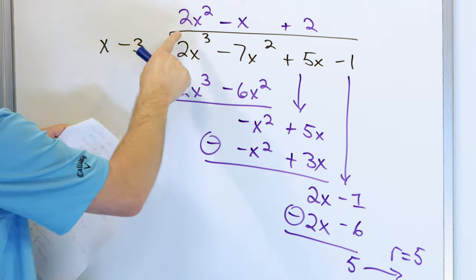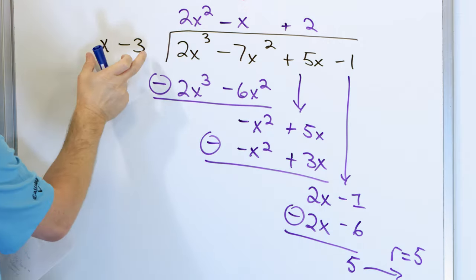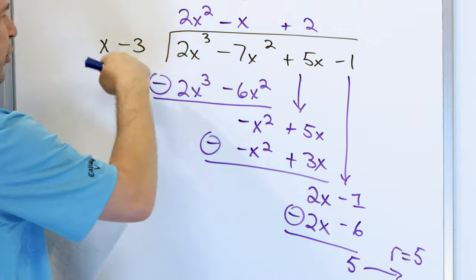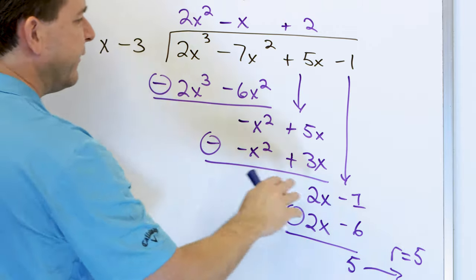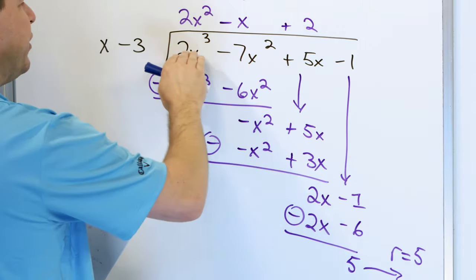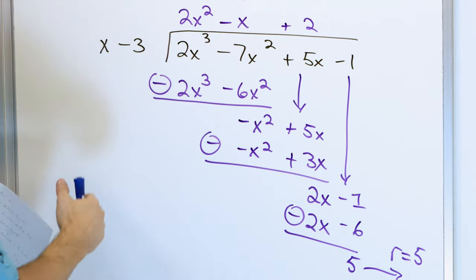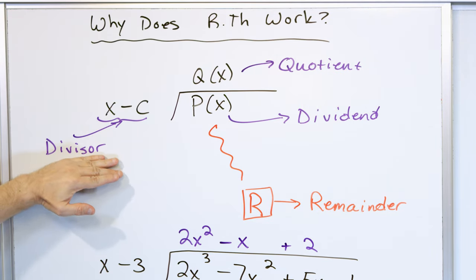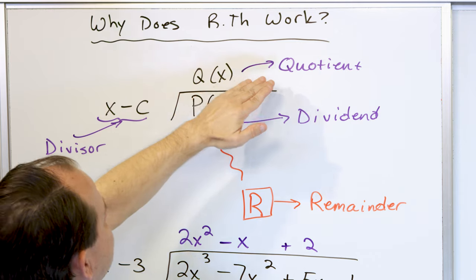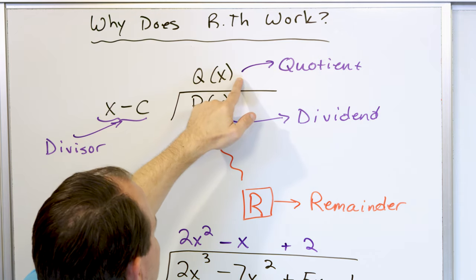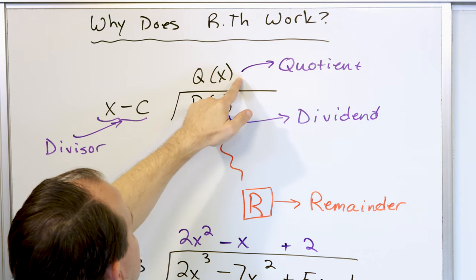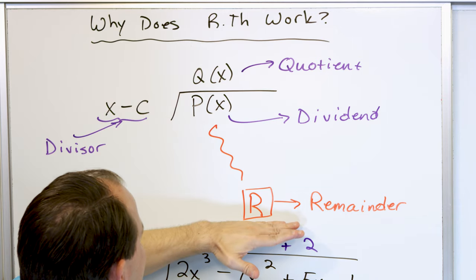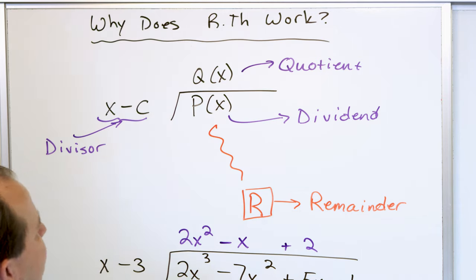What you do is take what you get at the top, multiply by what's on the outside, and then whatever you get as a result, you add the remainder, and you should get back what's underneath. So another way of saying that is: you take the divisor, multiply it by the quotient, and you're going to get something — but you have to add the remainder back in to get what's underneath.